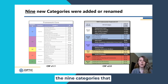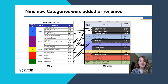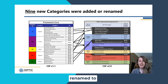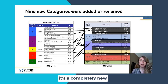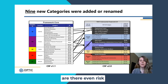I wanted to highlight the nine categories that were added or renamed. Like I mentioned, that business environment was largely renamed to organizational context. So while it looks like it's a completely new thing that you haven't seen before, a lot of those concepts are still there.